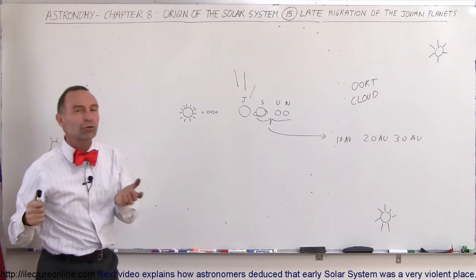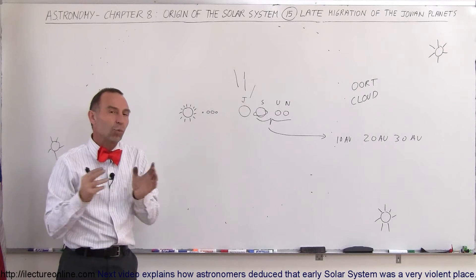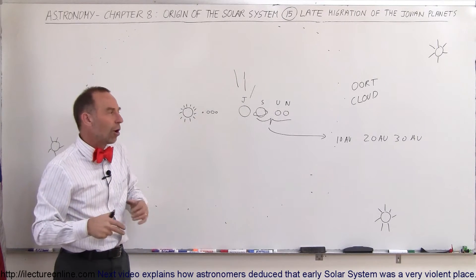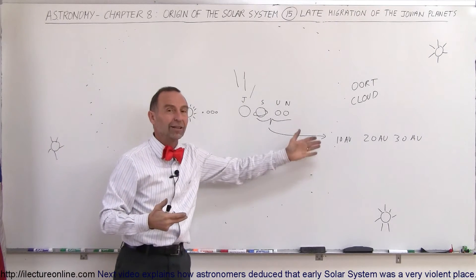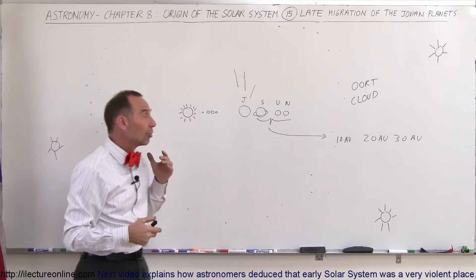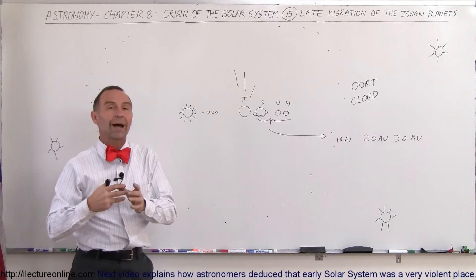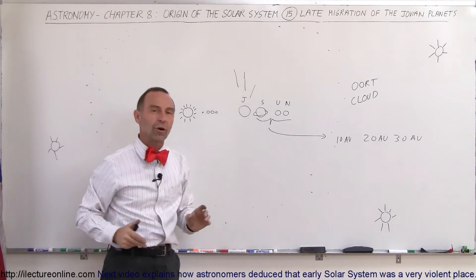Again, they're looking for solutions, they're looking for explanations why the solar system looked the way it does. Our initial calculations, our initial simulations, do not necessarily support those planets being that far away, and we assume that the planets formed closer by and then somehow migrated to those far away distances.